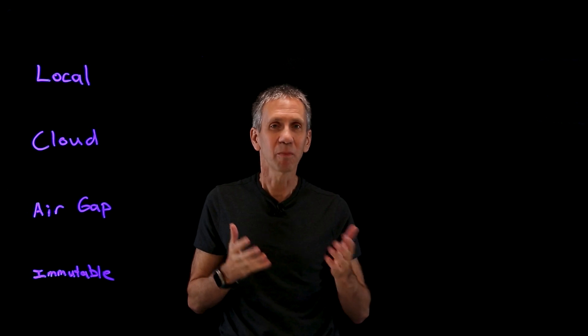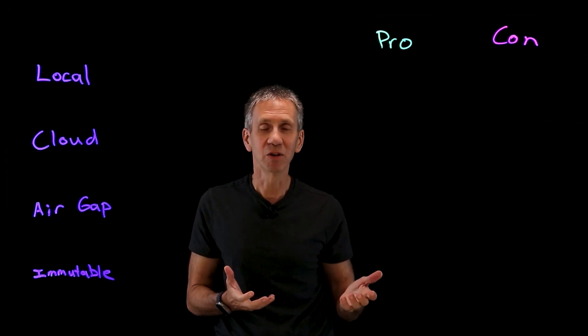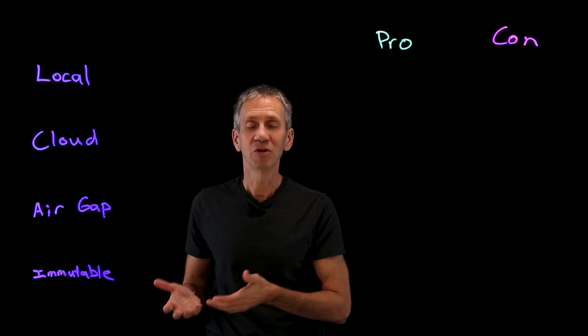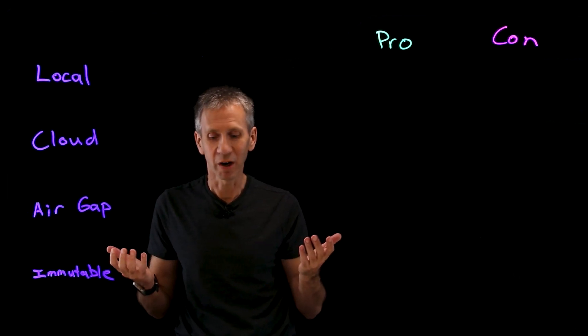Backing up your data is not the most exciting topic until you really need it. Once you've been hit by ransomware, you're going to wish you've done what I'm going to talk about. There are four different strategies for doing backups: local backups, cloud-based backups, air-gapped backups, or immutable backups. We'll talk about the pros and cons of those and how they can prepare you so that when the ransomware attacker demands money, you can thumb your nose at him and go along your merry way.